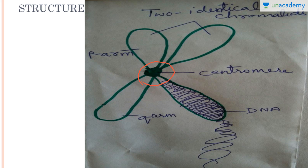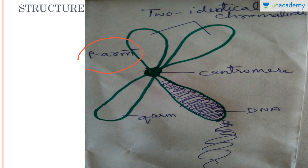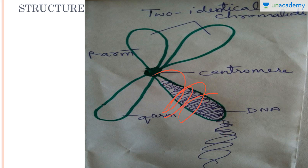They have different arms. If the centromere is present at the center, there will be four arms — one, two, three, four. If the centromere is at the ends, so the two chromosomes are joined at the ends, there will only be two visible arms. So this is about the centromere. Now the shorter arm of the chromosome is called the P arm, and the longer arm is called the Q arm. Inside these chromosomes, as I'm saying, they are tightly packed thread-like structures, and what is tightly packed is the DNA.